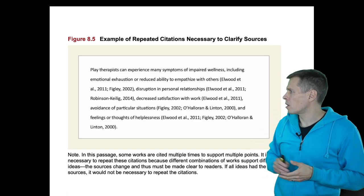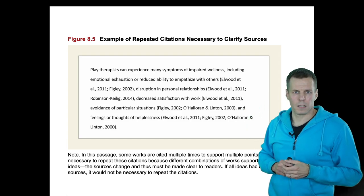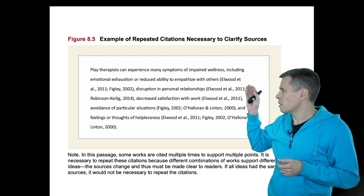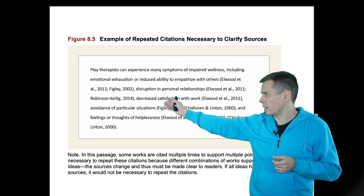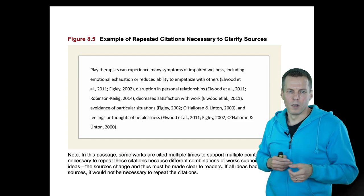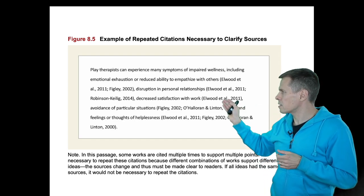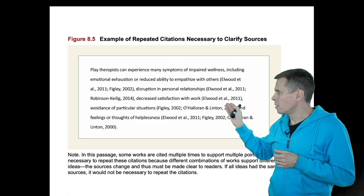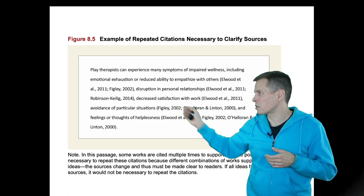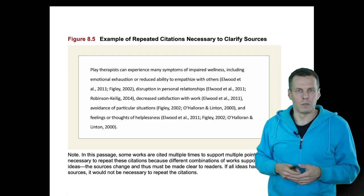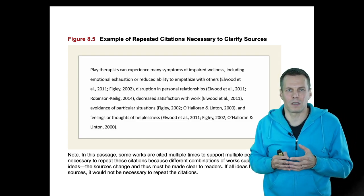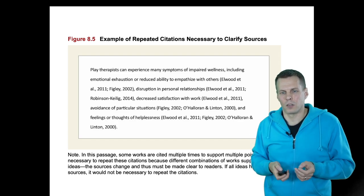Here is another example where parenthetical citations are necessary. Even though this paragraph is based mostly on Elwood, there is some detail that comes from Robison and Kellig. Because there is a detail from another article, you have to clarify which points come from Elwood's work and which come also from Robison and Kellig. So sometimes it is necessary to have multiple citations, but often it is not.